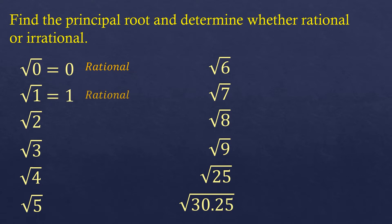The principal square root of one is rational. Remember: if a decimal is non-terminating it is irrational, but some decimals are rational as long as they terminate — meaning the decimal has an ending. So a terminating decimal is still rational.